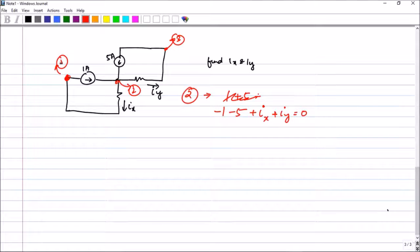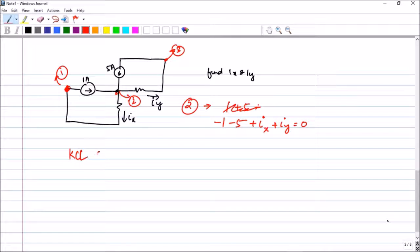Let us apply KCL at node 1. Let us see what we get. So Ix is entering the node. So minus Ix. And 1 ampere is leaving the node. So plus 1. Equal to 0. Ix is equal to 1 ampere.